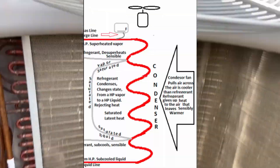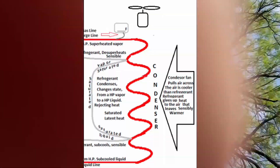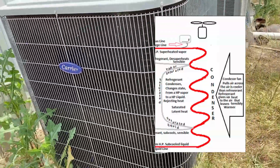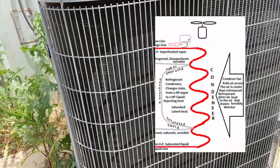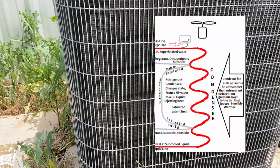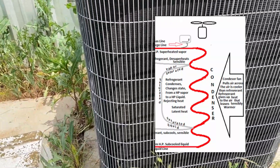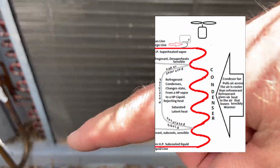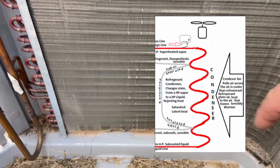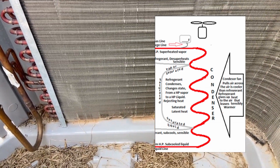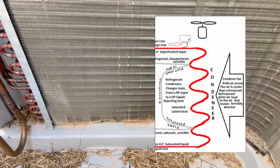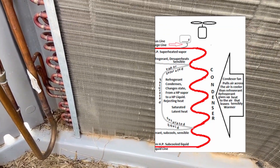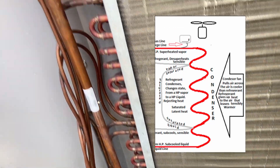If we look on the outside, we can see the same thing — it's just simple heat transfer: refrigerant changes from a vapor to a liquid, rejecting heat. The majority of this is going to be at saturation. Now, after we've changed state from a vapor to a liquid, the very bottom part of this condensing coil is subcooling — it takes the refrigerant below saturation, which we call sensible heat.